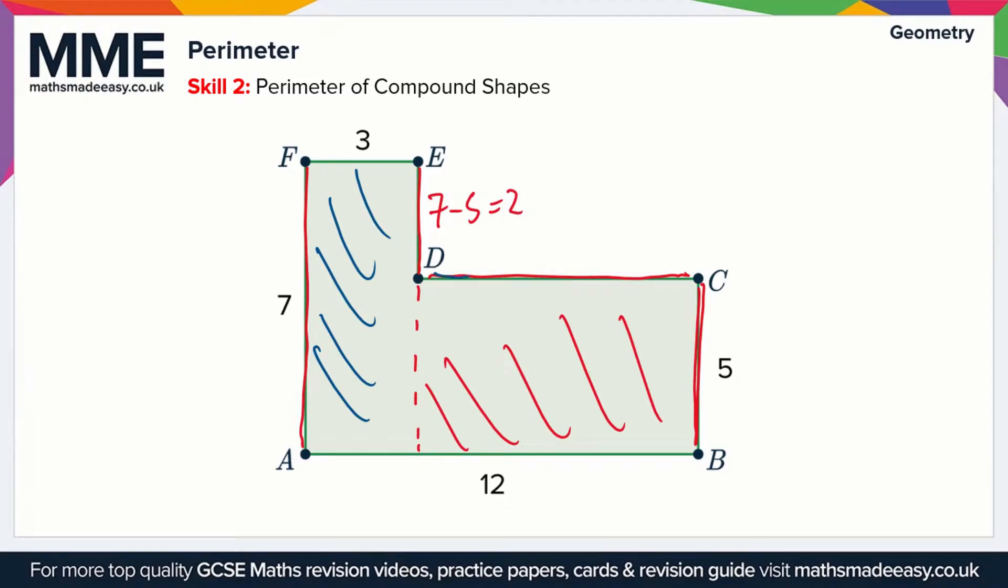I'm going to use a different color here to highlight this line DC. We can do the same sort of thing. The line A to B is equal to 12, and this is parallel to DC and so is the line FE which equals 3. So DC is just the difference between these two sides. That's 12 minus 3 which equals 9.